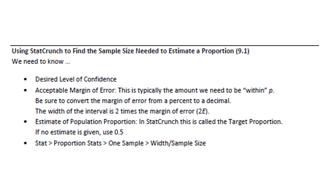When using StatCrunch to find the sample size to estimate a proportion, we first need the level of confidence that we desire. Second, we're going to look for the margin of error E — that's typically mentioned in terms of being within a certain amount of the population proportion. In StatCrunch, we need the width of the interval, which is two times the margin of error. The margin of error in these problems will typically be a percent, but needs to be converted to a decimal in StatCrunch.